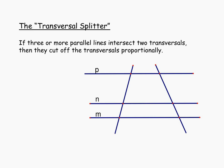An idea closely related to the side-splitter theorem is the transversal splitter. If three or more parallel lines intersect two transversals, then those parallel lines cut off the transversals proportionally. If P, N, and M are all parallel, and we label segments A, B on one transversal and C, D on the other, then A to B is proportional to C to D.